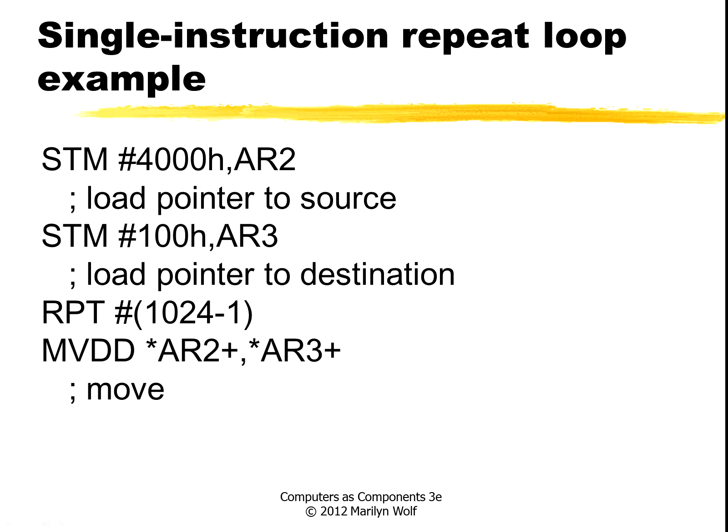For example, to use the single instruction repeat loop, we'll set up a pointer to the source and a pointer to the destination for this operation. Here's the repeat: we're going to repeat it this many times, and it's a move where we're moving from the source to the destination. So we're doing this entire move of 1,023 operations with the repeat plus one instruction.